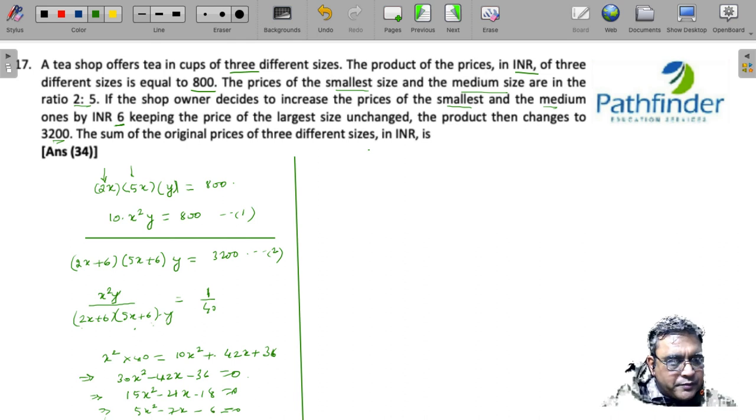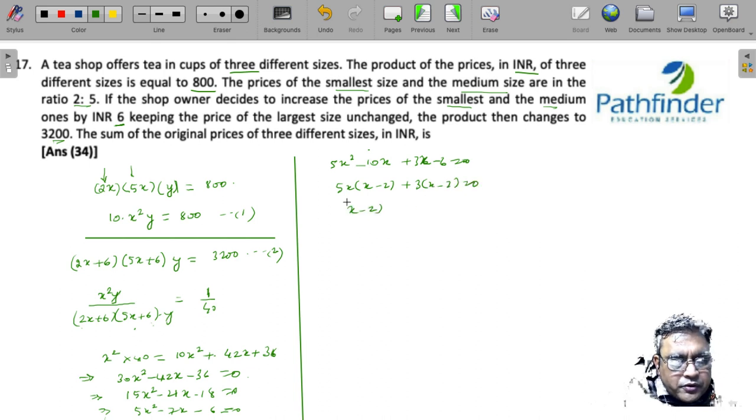So we get 5x² - 10x + 3x - 6 = 0. So 5x into (x - 2) plus 3 into (x - 2) = 0. (x - 2) into (5x + 3) = 0, which means x must be equal to 2 or -3/5.